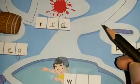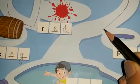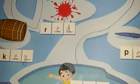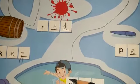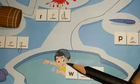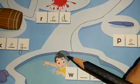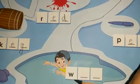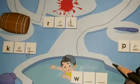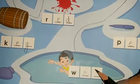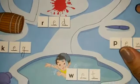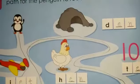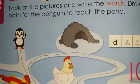And then finally the penguin reaches the pond. What do you see over here? There is a boy who is in the pond — he is wet. The word is wet, W-E-T. So write down E-T, wet. In this way, we have been able to help the penguin reach the pond.